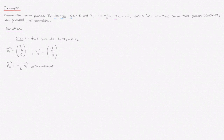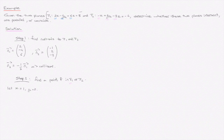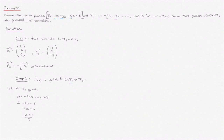Consequently, the planes pi1 and pi2 are either parallel or they coincide. Step 2: find a point P in pi1. Letting x equal 1 and y equal 0, and using pi1's equation: 2(1) minus 4(0) plus 6z equals 8, giving 6z equals 6, so z equals 1. Point P with coordinates (1, 0, 1) is contained in pi1.